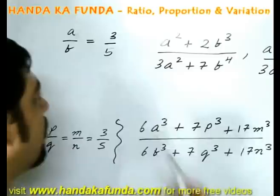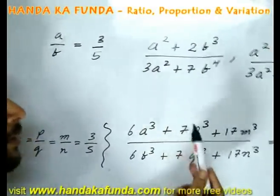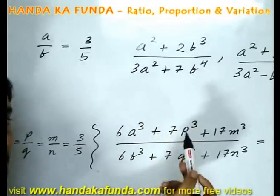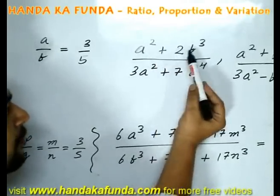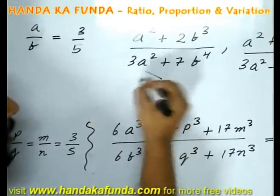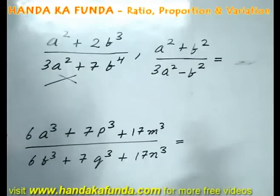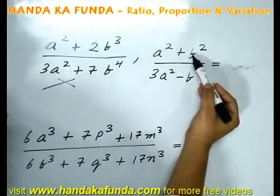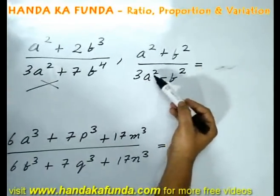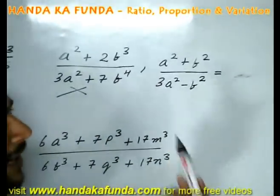Let us say I am given the value of A by B as 3 by 5 and I am asked to find out the value of this equation. Is it possible? No. For solving such an equation in A and B, it is necessary that all the powers are same. As you can see, the degree of A here is 2, B is 3, A is 2 and B is 4. As long as they are different, you can never find out a solution for this. However, if all the degrees are same, then you can get a solution. Theoretically, ideally, you should be solving it by dividing the numerator and denominator by B square. You will get A square by B square plus 1 and thrice of A square by B square minus 1. Then you have the value of A by B. Put in the value of A square by B square and you will get the answer.